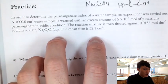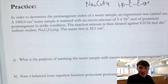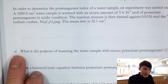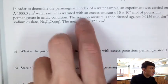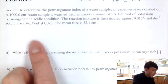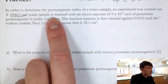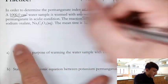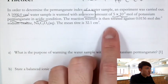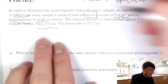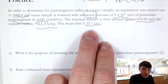Assume you have finished the question. Part A: the purpose of heating the water sample with excess permanganate is to ensure all oxidizable contaminants are oxidized. Part B: write a balanced ionic equation between permanganate and sodium oxalate. Sodium oxalate is oxidized to CO2, and permanganate is reduced to Mn2+. Using oxidation numbers: Mn changes from +7 to +2 (5 electrons per MnO4⁻), and each oxalate ion has two carbons each at +3, giving 2 electrons per mole of oxalate.